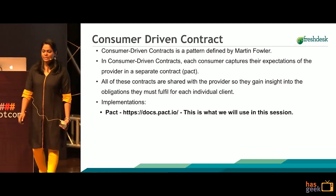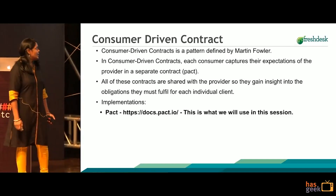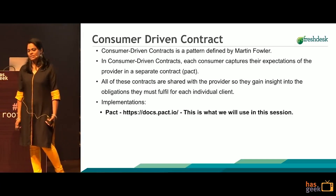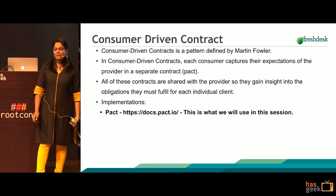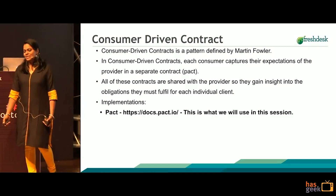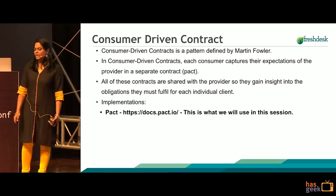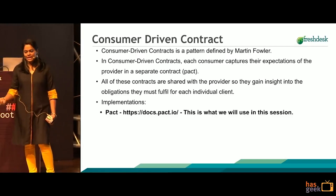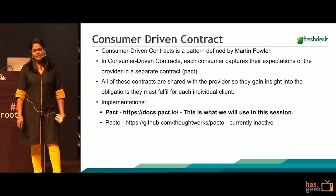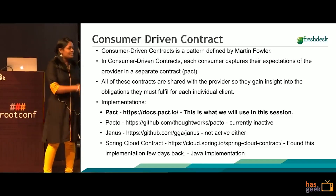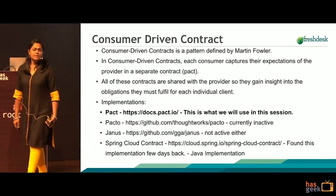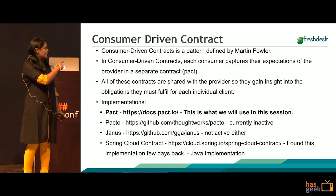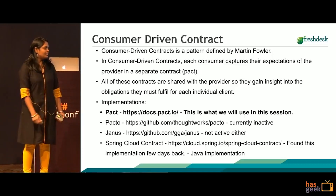There are various implementations of this concept — various tools which actually implement this Consumer-Driven Contract — and one such tool is PACT. PACT is an open-source library available in various flavors of languages. There are other tools called Pacto, Janus, and Spring Cloud Contract as well. Spring Cloud is actually a Java implementation of it.